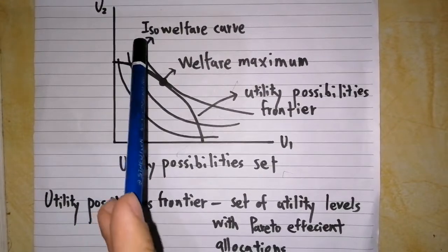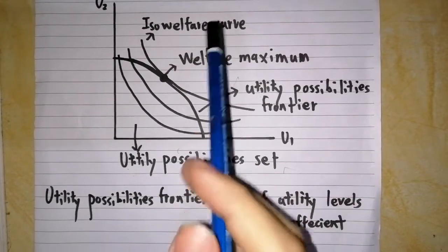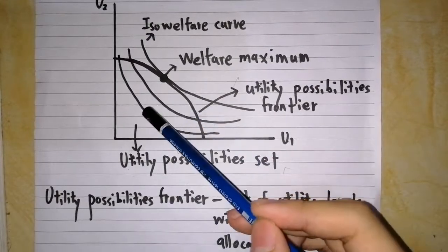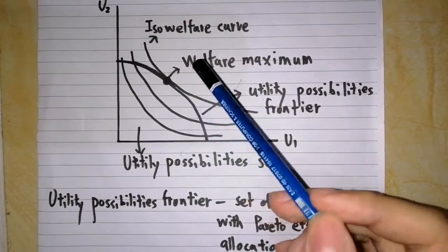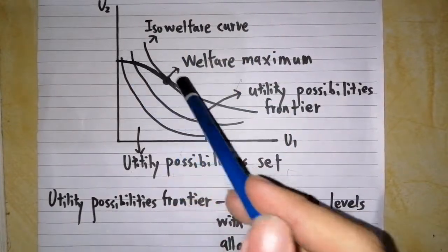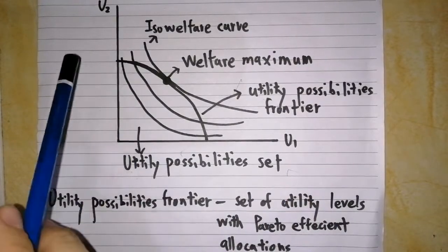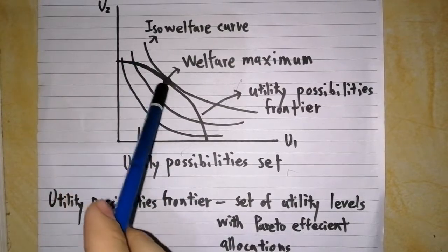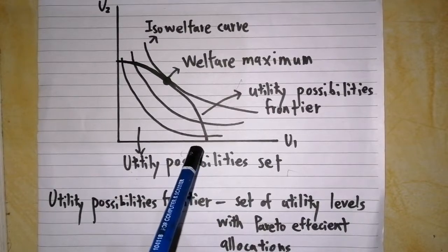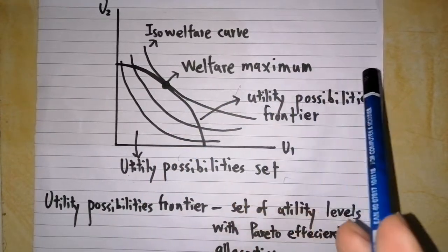In this diagram, there is also iso-welfare curve, also known as indifference curve. This curve depicts those distributions of utility that have constant welfare. There are three different iso-welfare curves. However, the welfare maximum point only occurs when the iso-welfare curve intersects with the boundary of the utility possibilities set. As I mentioned before, every point on this boundary is associated with Pareto efficient allocations. So this means welfare maximum must be Pareto efficient.